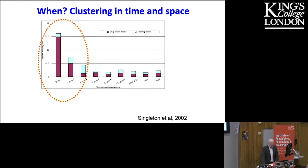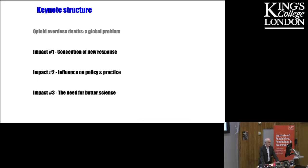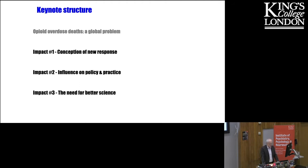We can study patterns of overdose deaths, but what are we going to do about it? First, we can have impact by conceiving of new types of intervention. Secondly, we can have impact by influencing policy and practice. And thirdly, we can have impact by application of better science to improve our interventions.